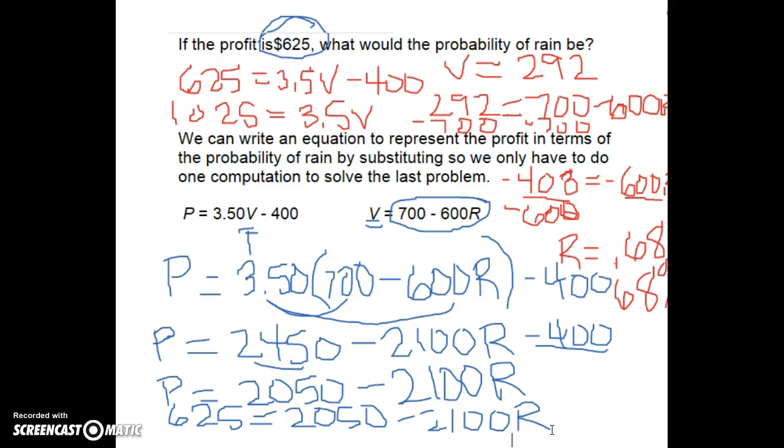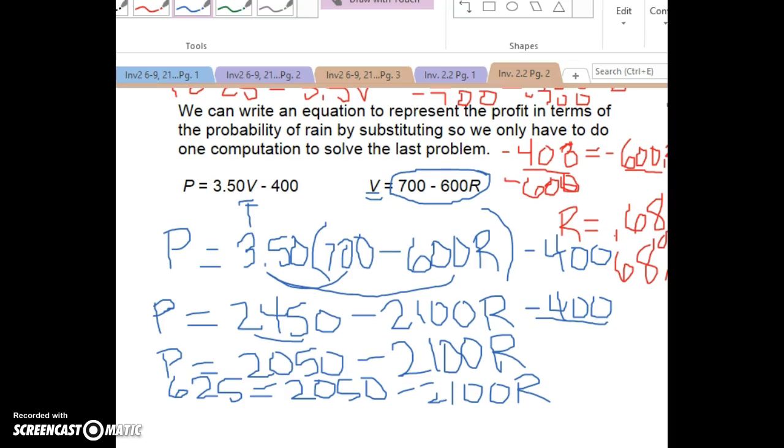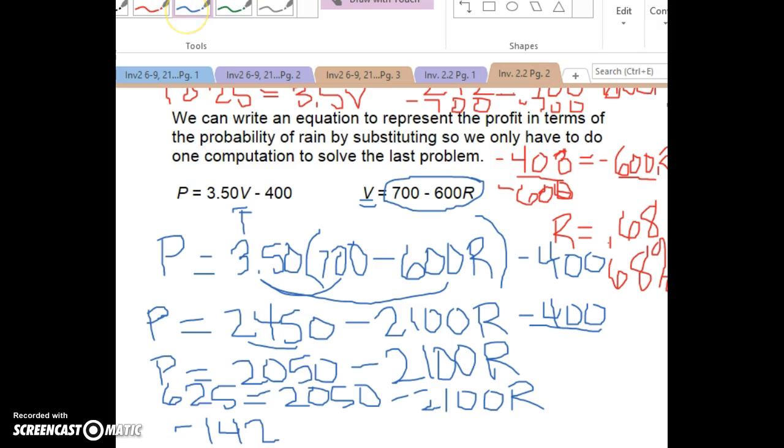So now in order to continue this, I am going to subtract 2,050 from both sides. And when I do that, 625 minus 2,050 is negative 1,425. So now I'm going to divide both sides by negative 2,100, and I get R equals 0.68.